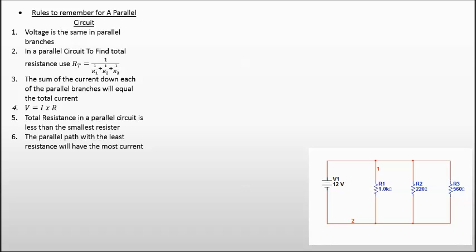Rule number six, the parallel path with the least resistance will have the most current. So we should expect in this circuit that we have here that R2 path is going to have the most current and R1 path is going to have the least amount of current. So R2 is the path of least resistance.